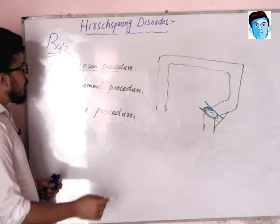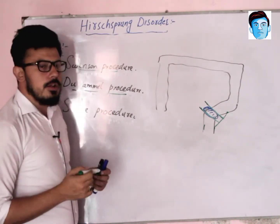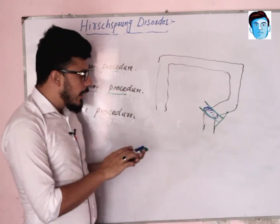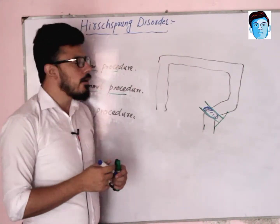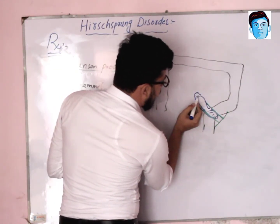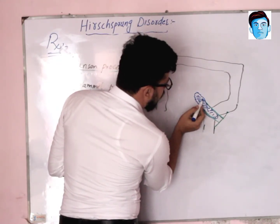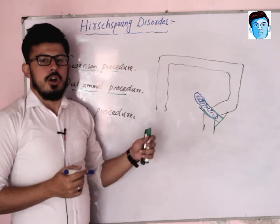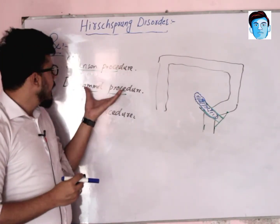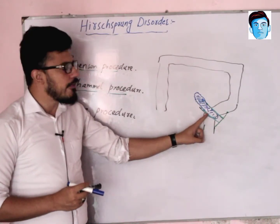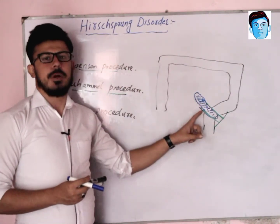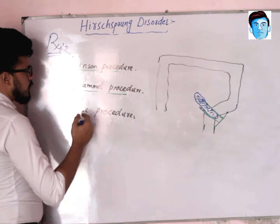In the Duhamel procedure, we similarly resect the aganglionic portion of the intestine, but here we do not entirely remove the affected part — we pull the aganglionic part upward and perform an end-to-end anastomosis between the normal colon and rectum. The key difference from the Swenson procedure is that in the Duhamel procedure the affected part is not fully removed.